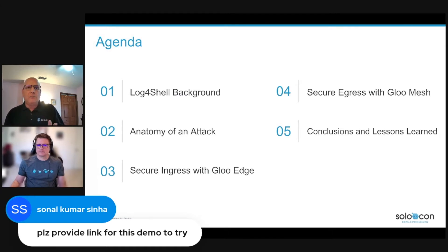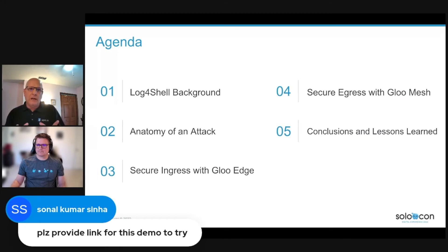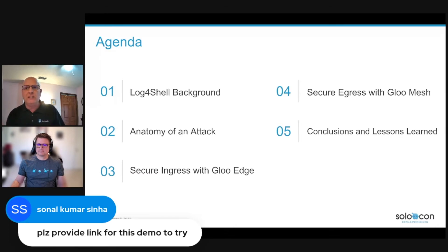I'll explore blocking malicious requests at the ingress point of your application network using Glue Edge. Will will then walk us through defeating Log4Shell by blocking egress from our applications to an attacker's server using Istio and Glue Mesh.